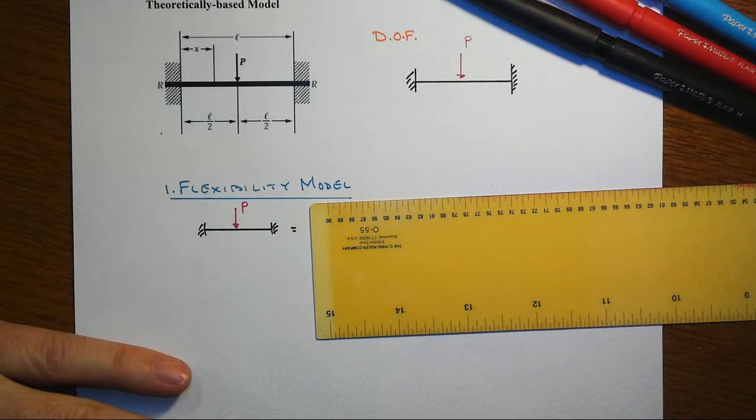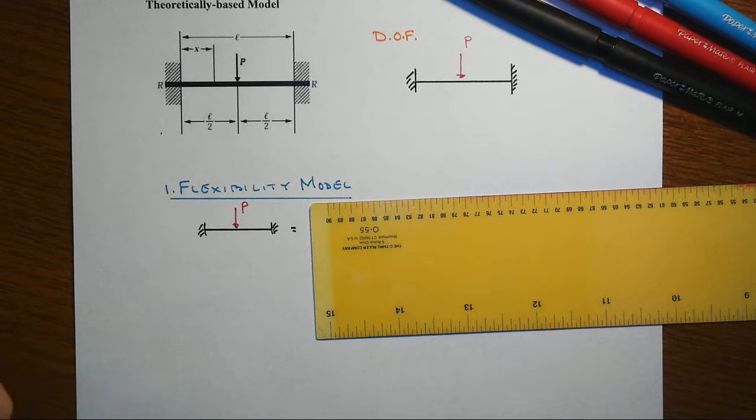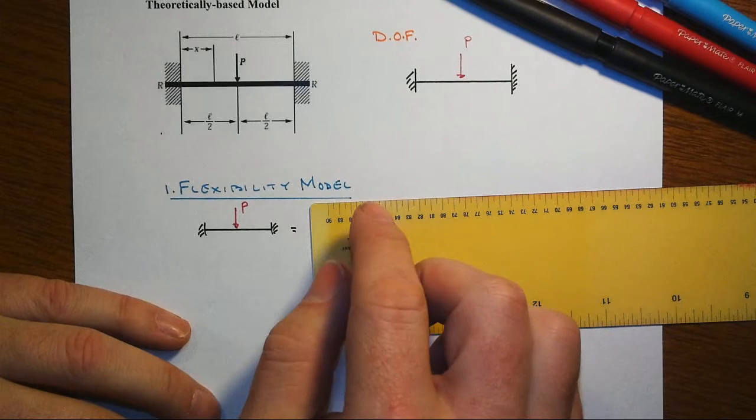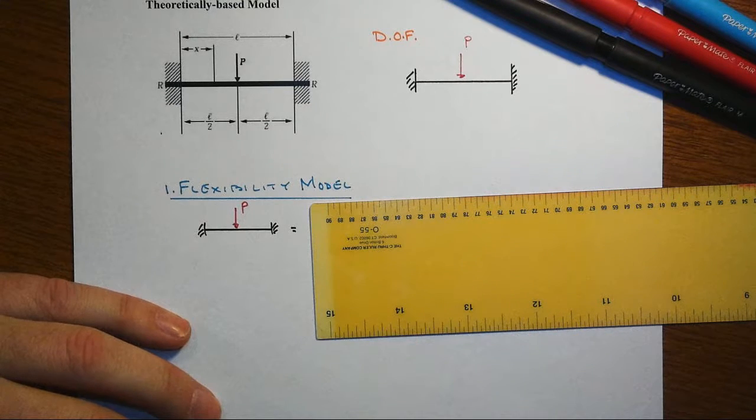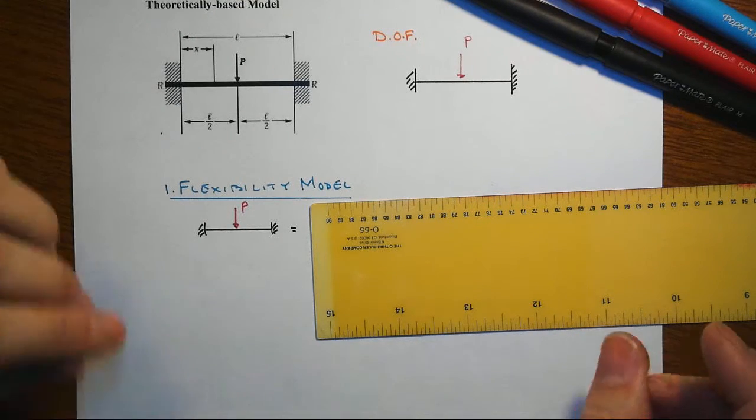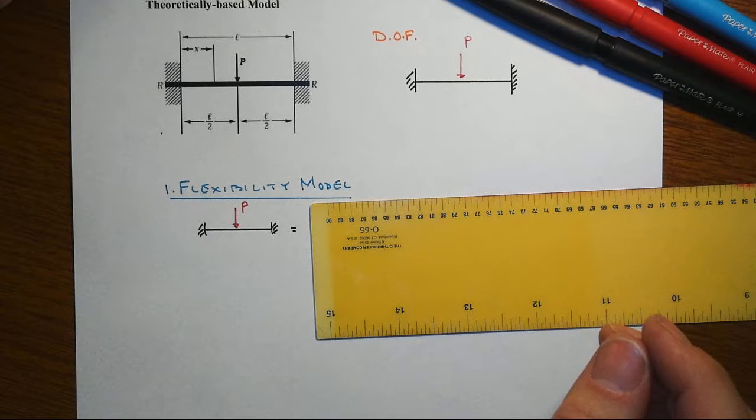Recall the options we have for analyzing statically indeterminate systems. The flexibility model is one such option, and we can remove the redundant reactions and then successively replace them. That's what we're going to pursue here.